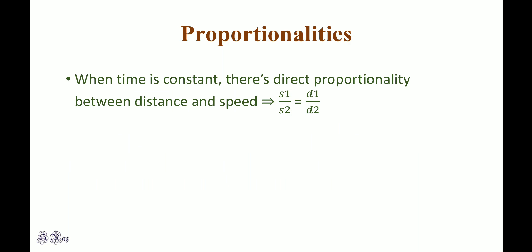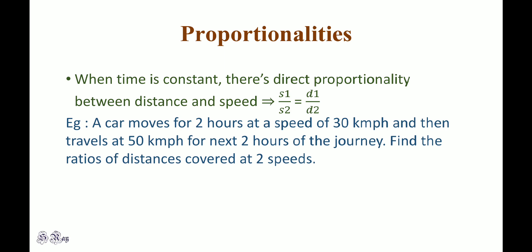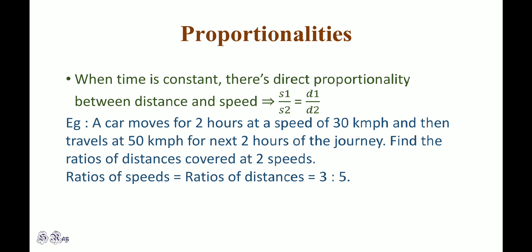Similarly, when time is constant, speed and distance are directly proportional — that is s1 by s2 is equal to d1 by d2. A car moves for 2 hours at 30 km/h and then travels at 50 km/h for the next 2 hours. The ratio of distances covered at the two speeds is 3:5.